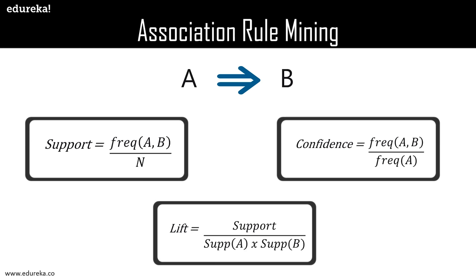For that, we need the third metric: lift. Lift is the strength of any rule. Looking at the denominator of the lift formula, we have the independent support values of A and B, which gives the independent occurrence probability. If the denominator of the lift is large, it means the occurrence is more due to randomness than association. Lift is the final verdict — it tells us whether we should spend time on a particular rule or not.